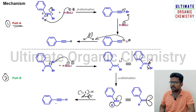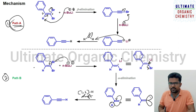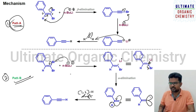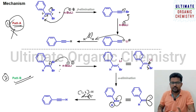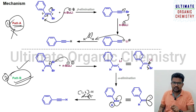The conclusion is that Path B via the carbene intermediate is the correct pathway, as recent literature reports have proven the formation of the carbene intermediate in the Corey-Fuchs reaction. Path A is considered incorrect. For exams, either pathway may be written, but for interviews or viva, only Path B should be presented. A corresponding literature link is provided in the description section.